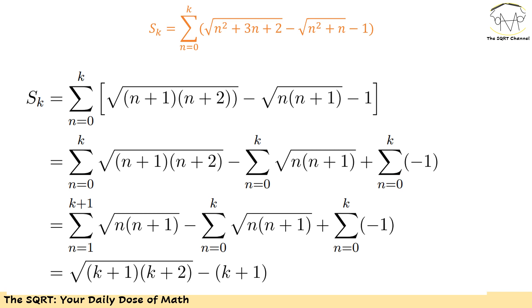First of all, let me focus on the first term of this sigma. I have √(n²+3n+2), which I can write as √((n+1)(n+2)). For the second term, which is √(n²+n), I'm going to write it as √(n(n+1)).